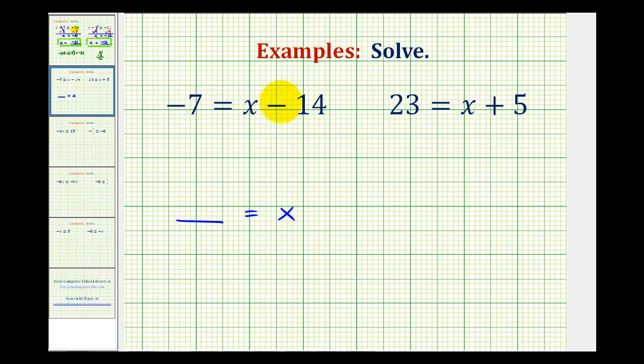Looking at the right side of the equation now, we don't want this minus 14 with the x, so we'll perform the opposite operation on both sides of the equation to undo the minus 14. Well, the opposite of minus 14 would be plus 14, so add 14 to both sides of the equation.